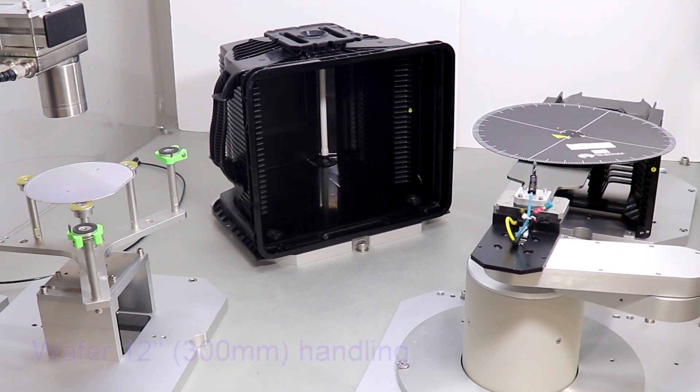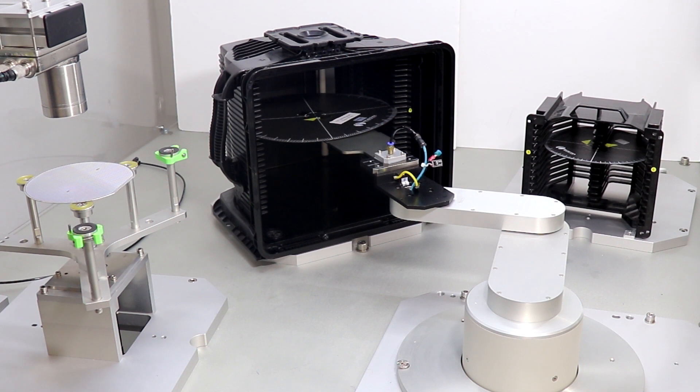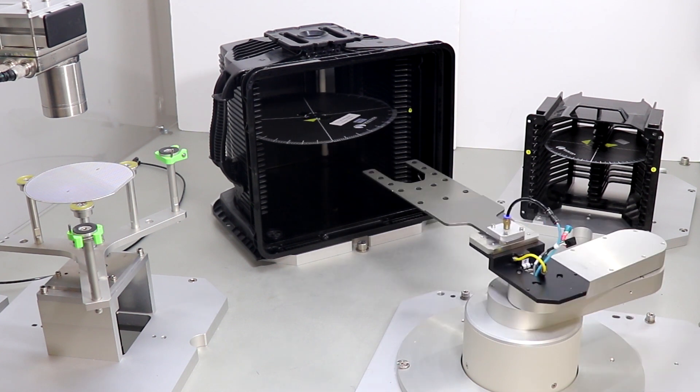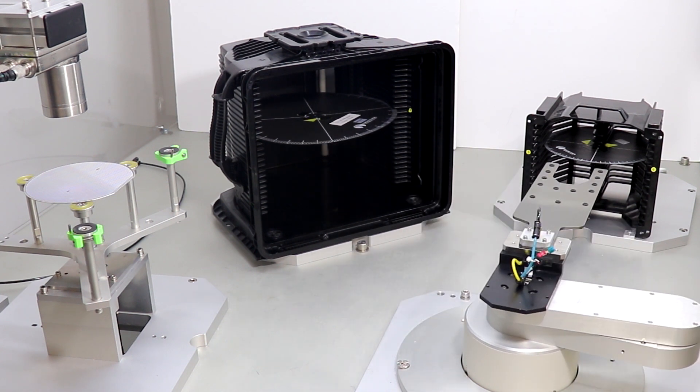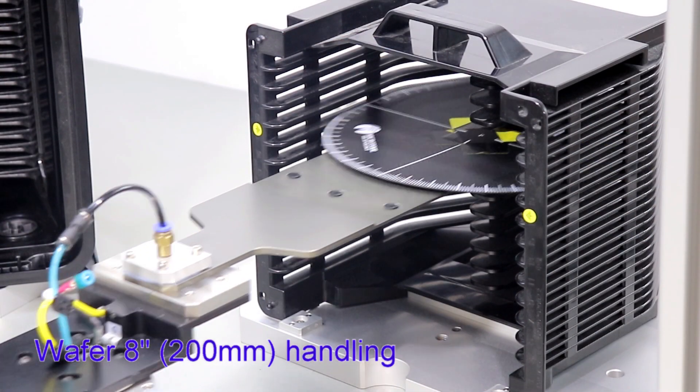The 200mm wafer has over 5mm bow and the 300mm wafer has 10mm bow. The bow shapes are random, versus simple concave or convex, which makes the manipulation even harder.